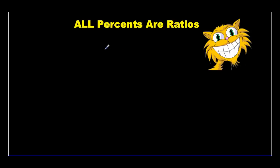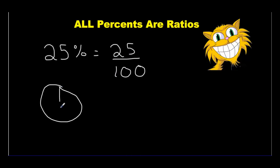All percents are ratios. Let me tell you what that means. Give me a percent, any percent. Let's say 25%. What does 25% mean? It means 25 out of 100. In other words, if you have a whole pizza, and you split it into four pieces, and you take one out, you eat that piece, you've eaten 25% of the pizza.